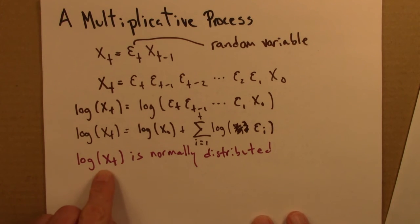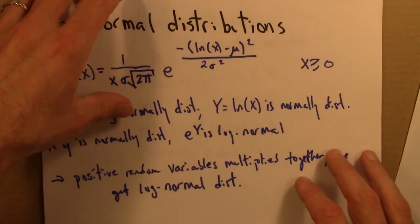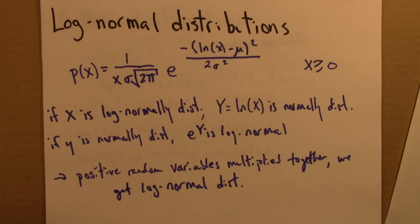Alright, so log of xt is normally distributed. What does that mean? Well that means that x, not log of x but just x, is log normally distributed. And so let's go back for a moment to log normal distributions from the previous unit.